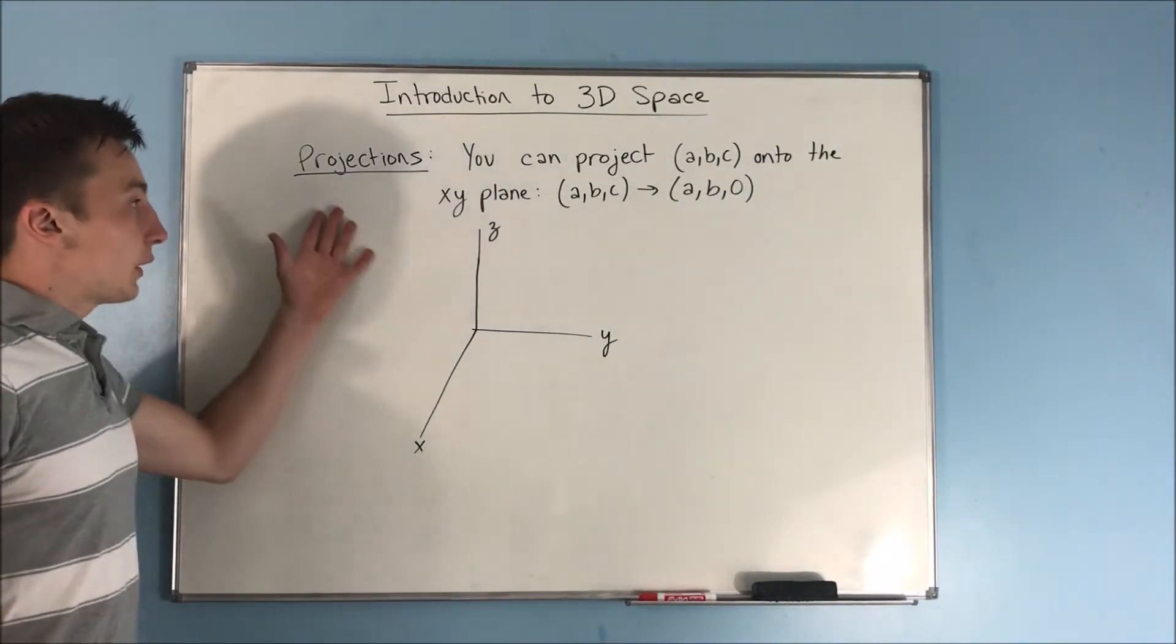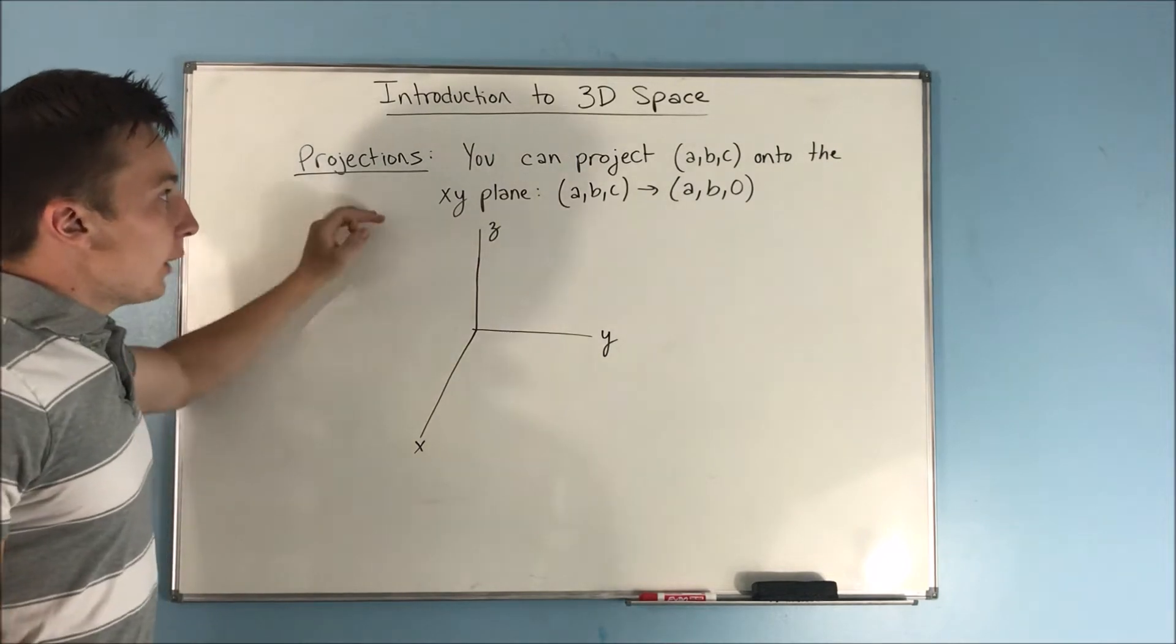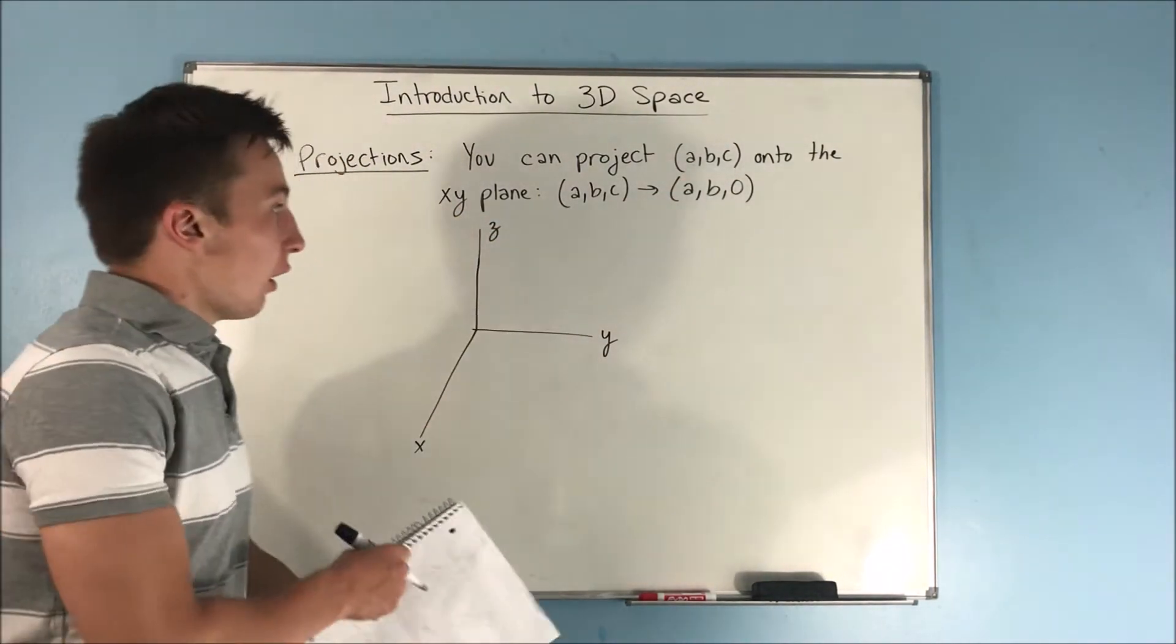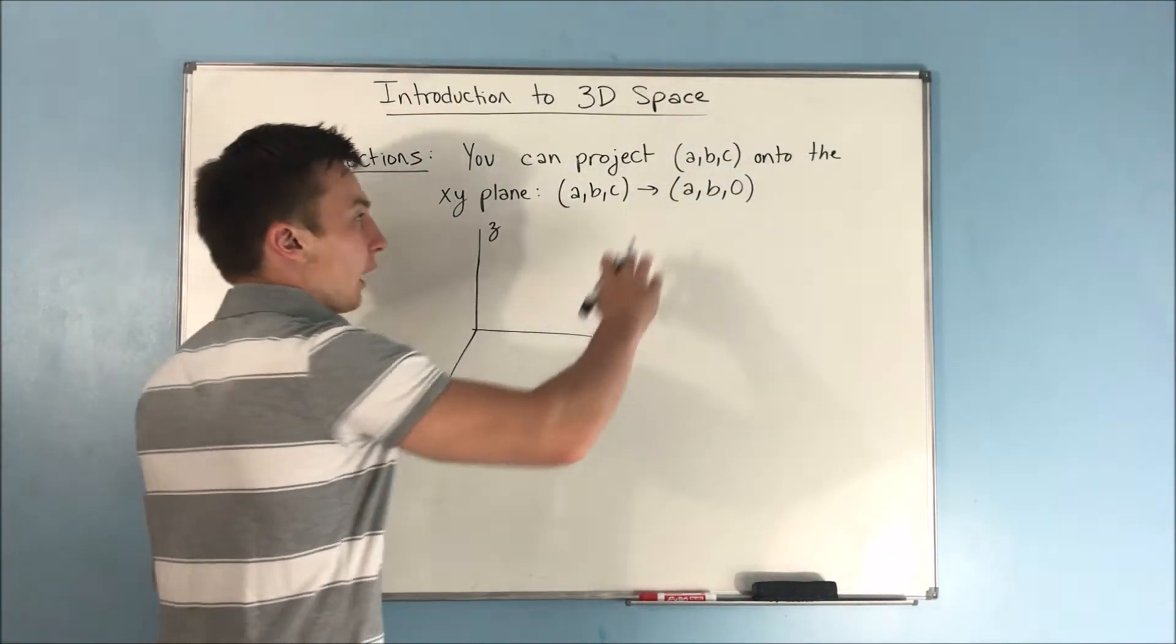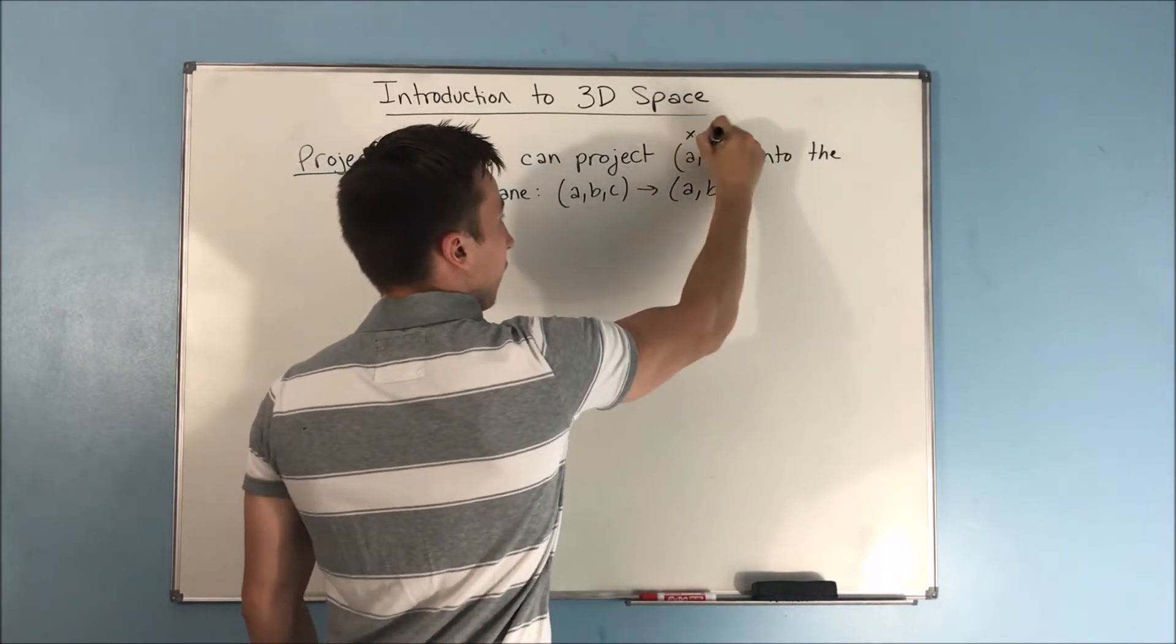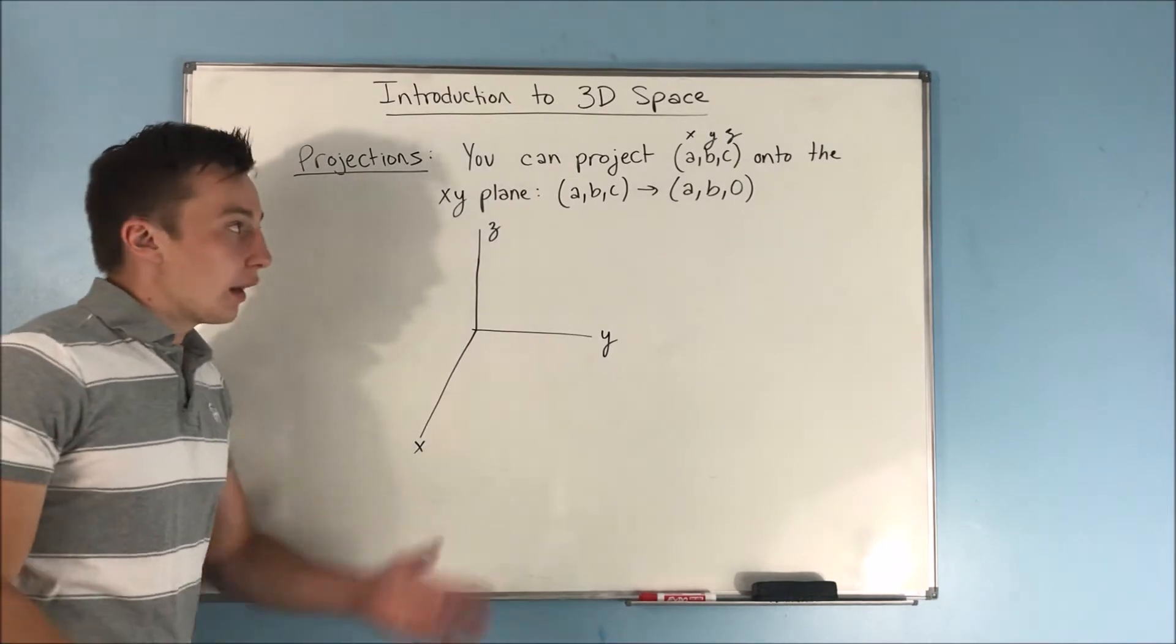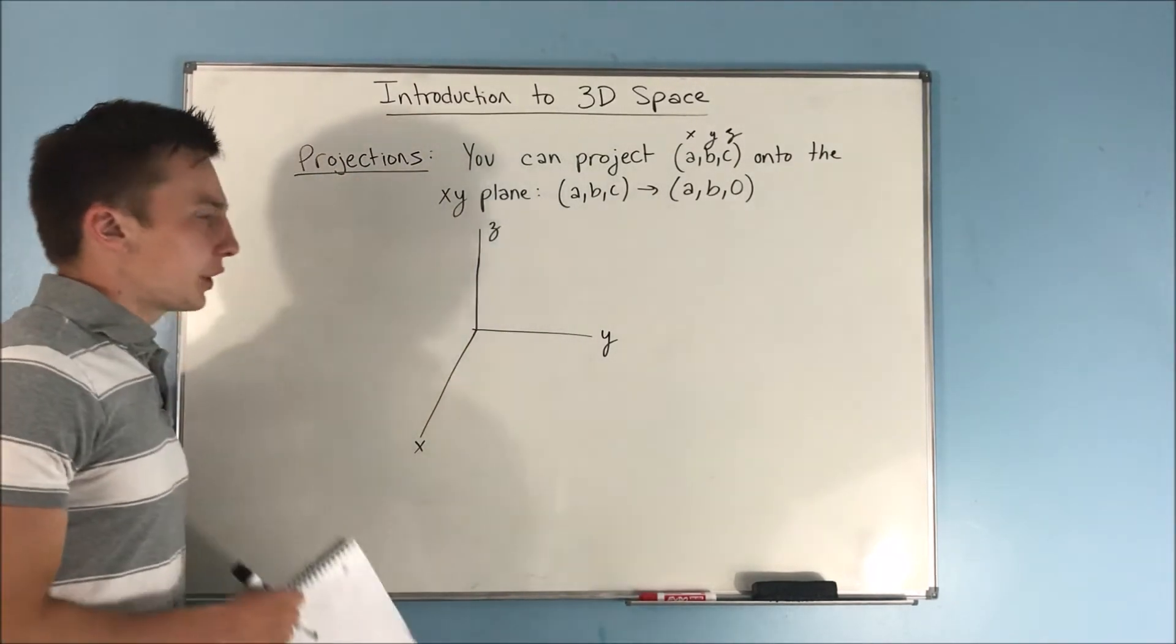So the first thing that we're going to be talking about is projections. Now, you can project the point ABC onto the XY plane. Now, real quick, but before we even get into that, what are the coordinates for this point? Well, this is the x, the y, and the z. That's in what order it goes. Of course, the order of the alphabet, right? But just to make that clear, if that wasn't already.